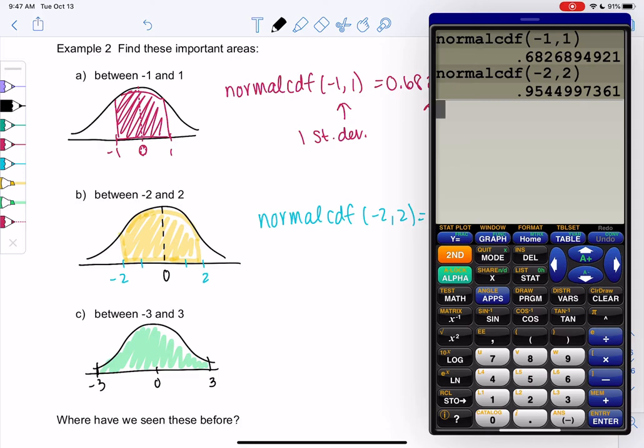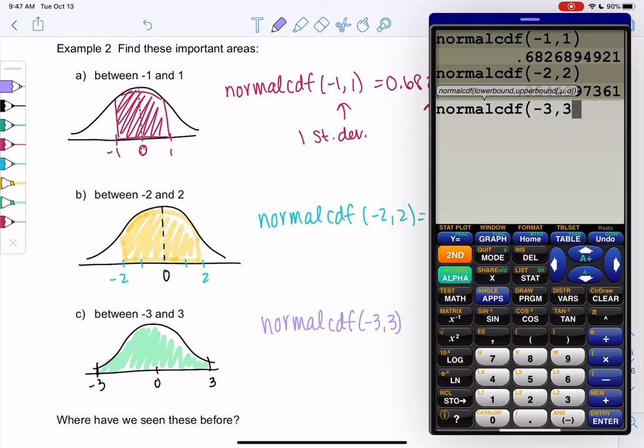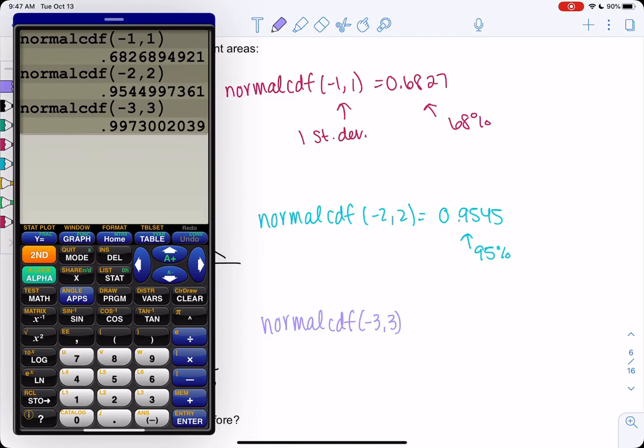Hopefully near 99.7. So we'll do normal CDF of negative 3 to 3. And I remember it being around 99.7 from empirical rule. Yep, 99.73.